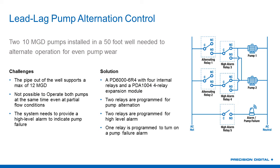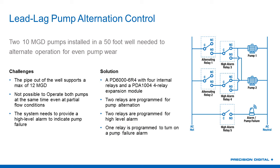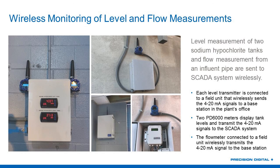We also have added an expansion module — our PDA-1004 — which adds an extra four relay capability. If we sell a PD-6006R4 — which is what this is — the 'four' means it's got four relays, which are three-amp single-pole double-throw. We added that module specifically because the customer wanted one relay to be programmed to turn on a pump failure alarm. So if there's some type of failure with the pump, we can be notified by this extra relay. A little bit different pump control situation, but certainly one we can solve by adding this four-relay expansion module.